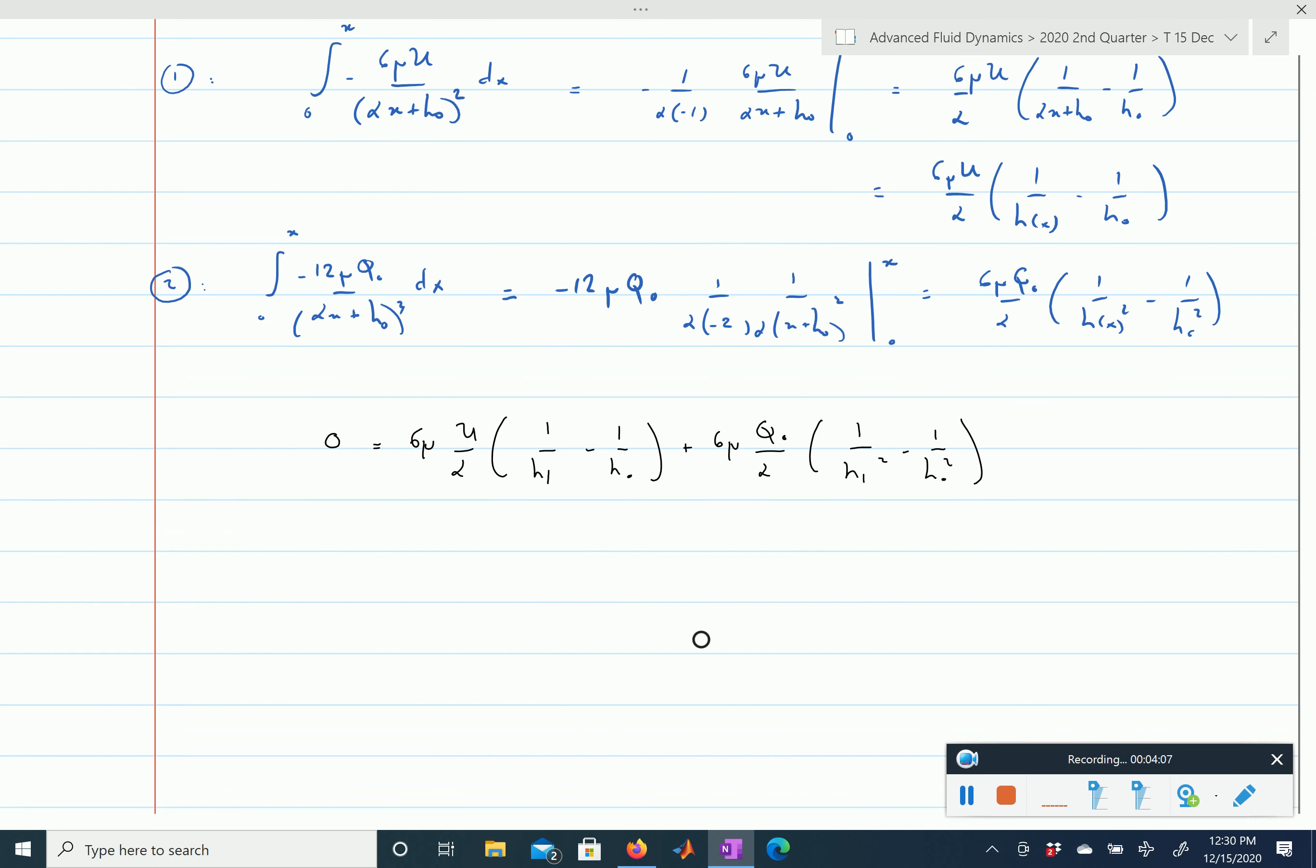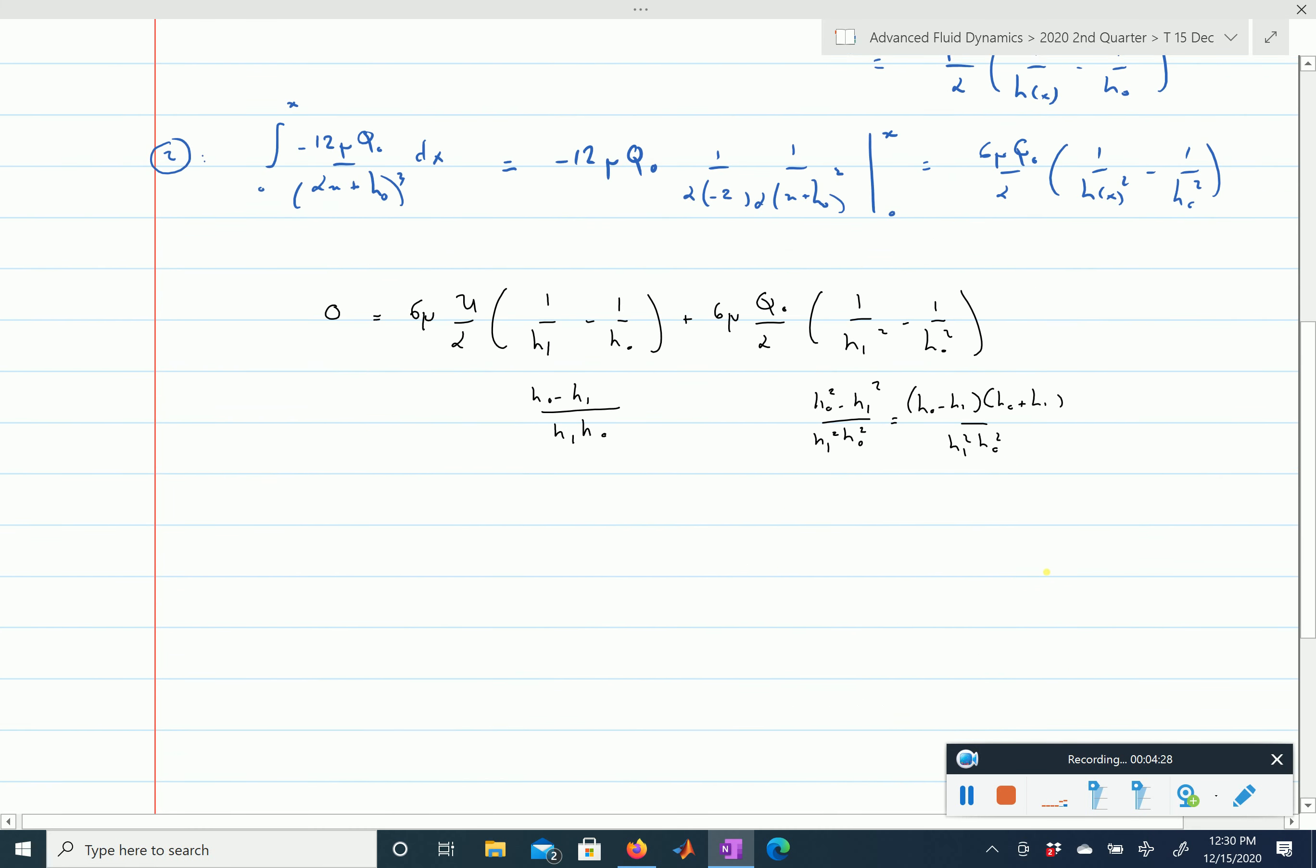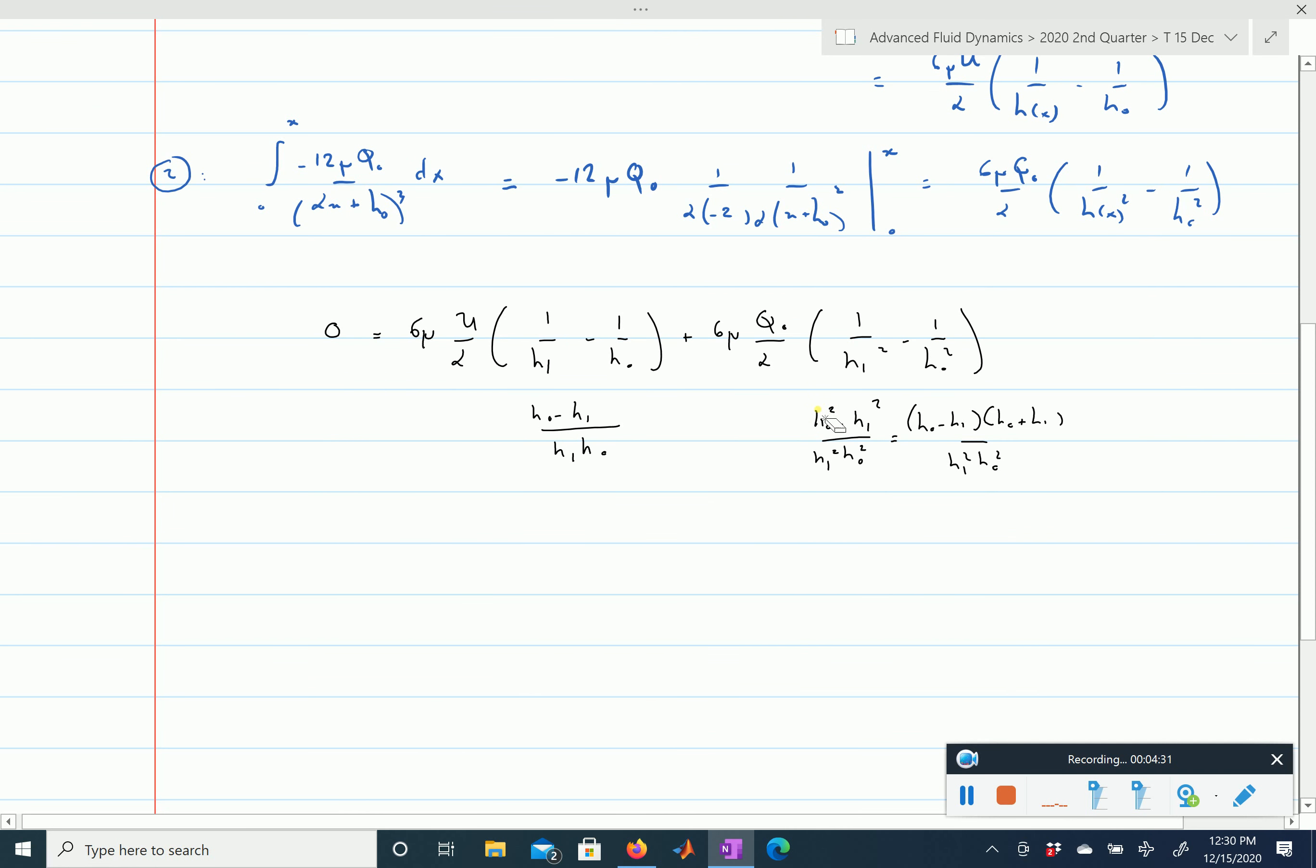Now note that we can slightly factorize these terms, you have a 6 mu alpha in front of both that we can simplify. This term here is equal to h0 minus h1 divided by h1 h0, and this term is equal to h0 squared minus h1 squared divided by h1 squared h0 squared. And actually this term you can further simplify, you use that this is equal to h0 minus h1 h0 plus h1 plus h1, and you see that you can get rid of the factor h0 minus h1 divided by h1 h0. You can get rid of this factor here, and you're just left here with h0 plus h1 divided by h1 h0.